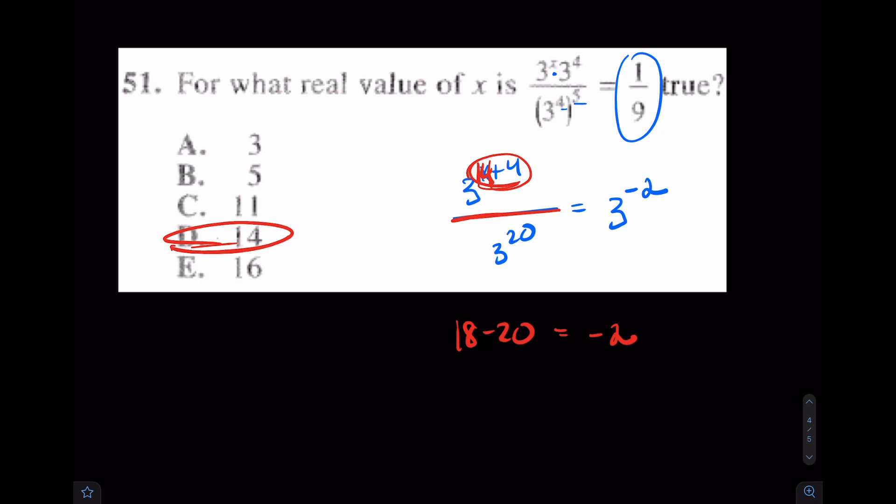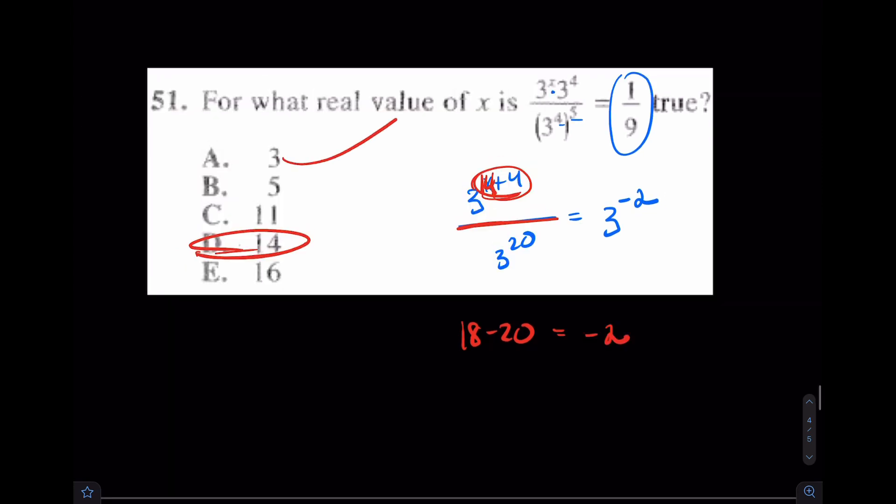There are other ways to try this question. Another easy way, in case you totally forgot your exponent rules, is just try answering using the answer choices. Just plug 5 in, plug 11 in, plug 14 in, until eventually you will find that you get the right answer, 1 9th. So, feel free to do that. If you don't know these exponent rules, or if you freeze on the test on Saturday, feel free to throw these answer choices in. That's totally another way that works.